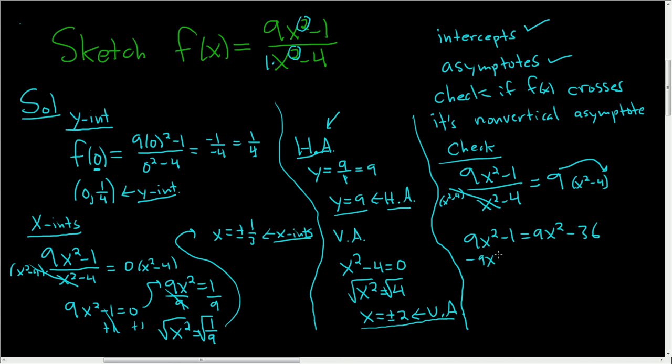We can subtract 9x squared, and so we get negative 1 equals negative 36. That's impossible. So we got no solution. That means it does not cross. If we had gotten an answer, like x equals 2 or x equals 3, then we would know that it would cross at 3. But we didn't get an answer, so it doesn't cross.